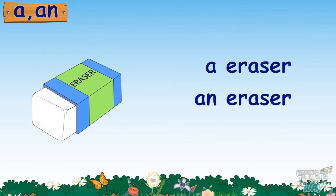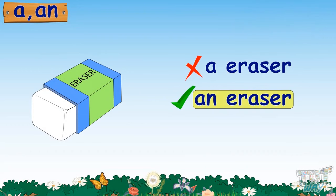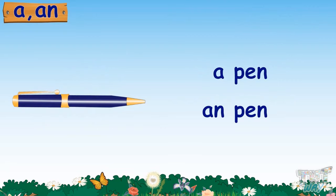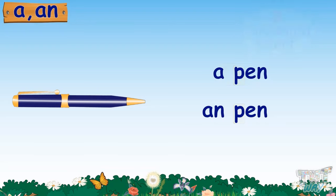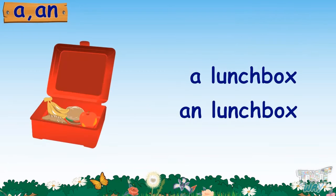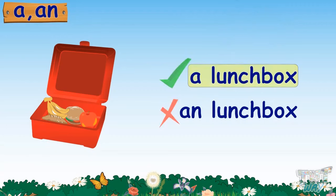Eraser — it begins with the vowel sound E, so we will use 'an' before it: an eraser. Pen — pen begins with the sound of letter P, so it's a consonant, and we will say: a pen. Here we have the picture of a lunchbox. It begins with the sound of consonant L, so we will choose 'a': this is a lunchbox.